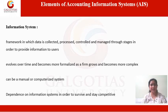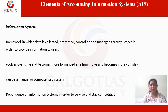The other essential element, comprehensive knowledge and understanding of which ensures successful implementation of accounting information systems, is the information system. An information system is a framework in which data is collected, processed, controlled and managed through stages, in order to provide information to users. It evolves over time and becomes more formalized as a firm grows and becomes more complex. It can be a manual or computerized system, as firms depend upon information systems in order to survive and stay competitive.